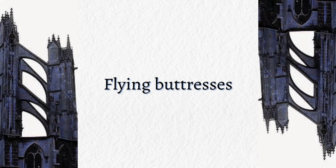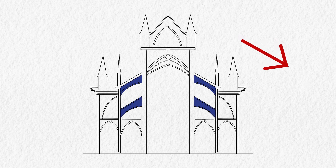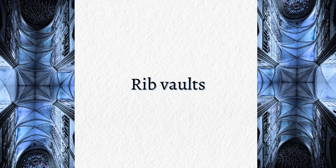Number 3: Flying buttresses. Flying buttresses are very important as they have arches to support the building exterior and transfer the weight of the roof and upper walls outward to the ground, preventing the walls from collapsing.